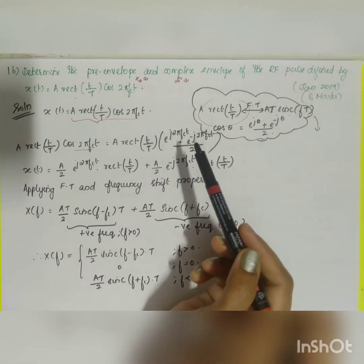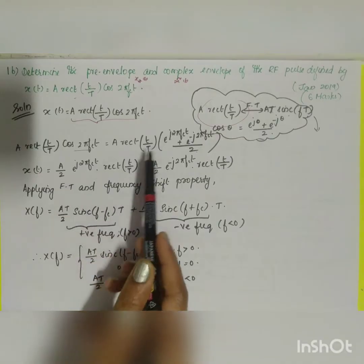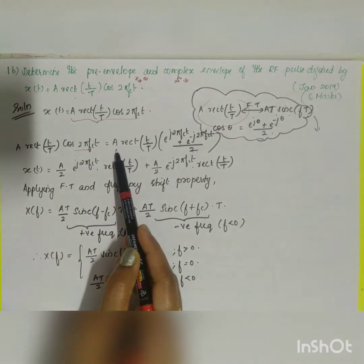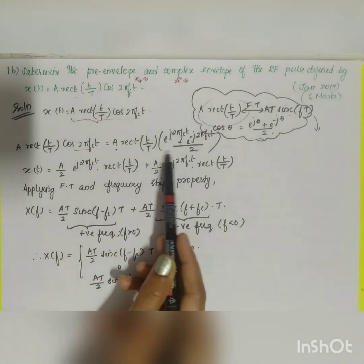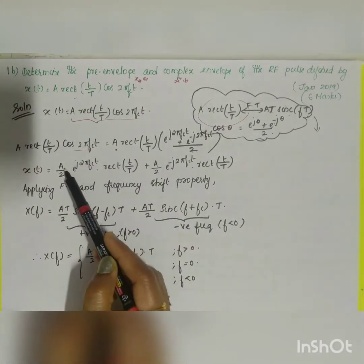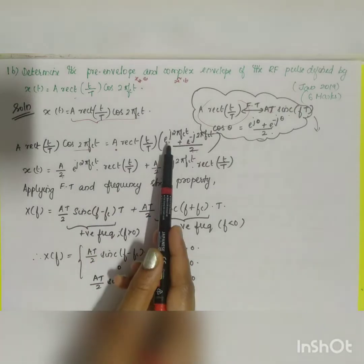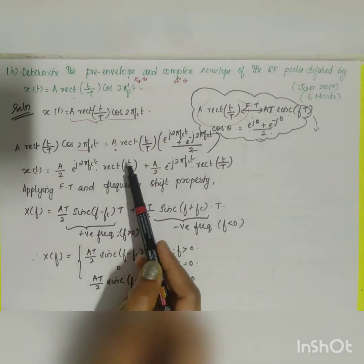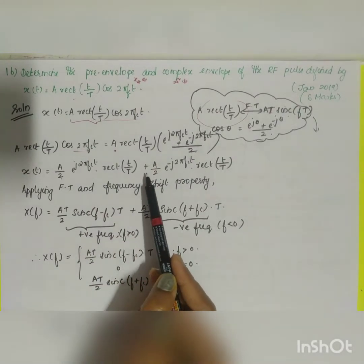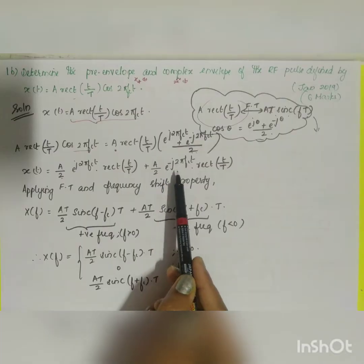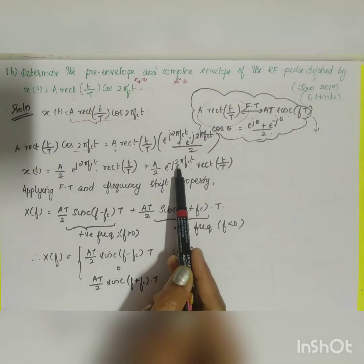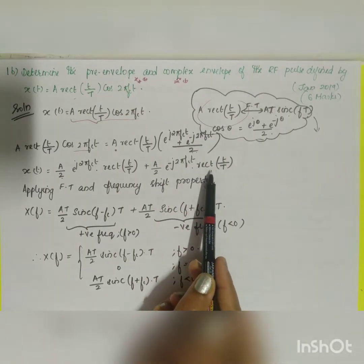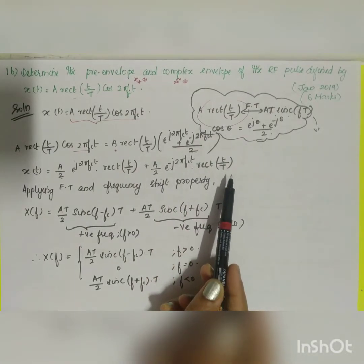Cross-multiplying inside gives: x(t) = (A/2)·e^(j2π·fc·t)·rect(t/T) + (A/2)·e^(−j2π·fc·t)·rect(t/T).